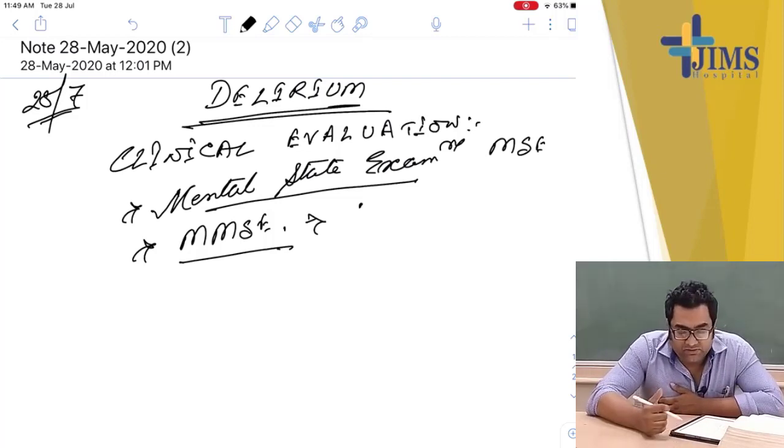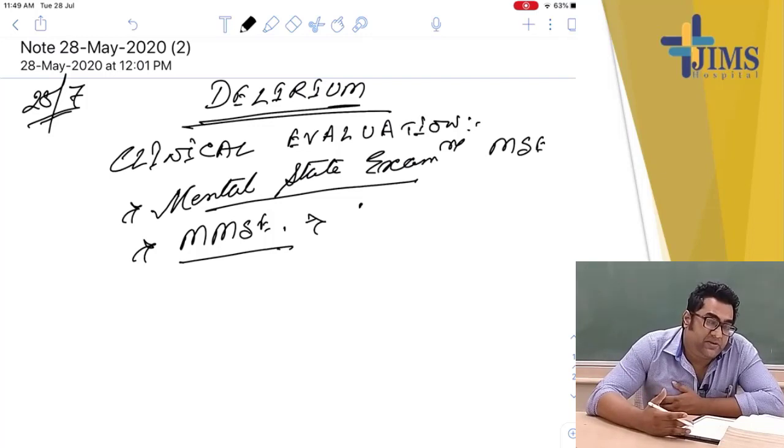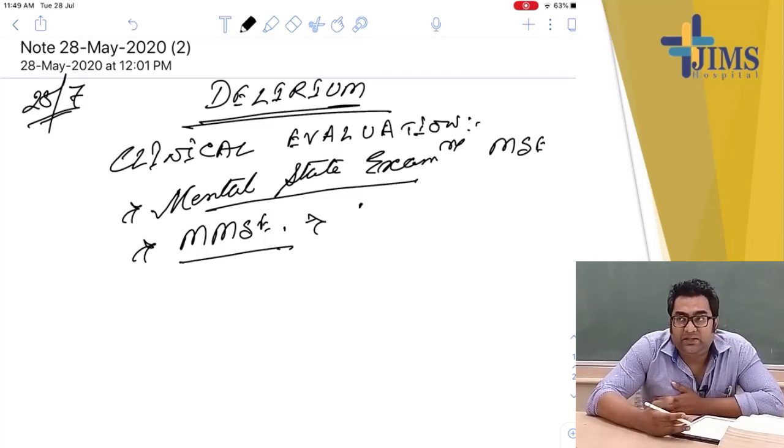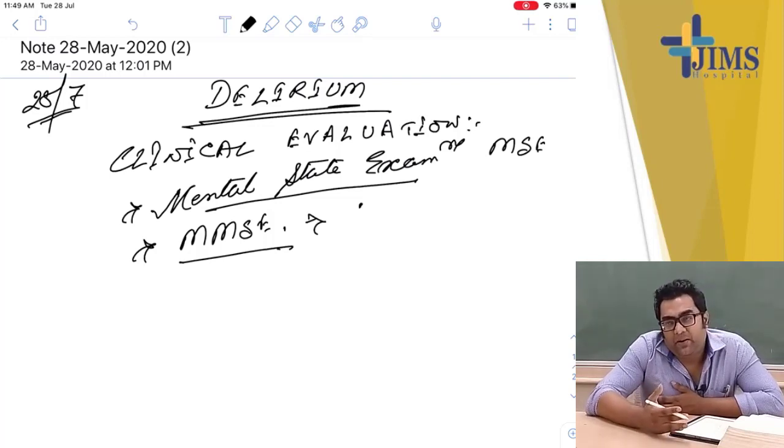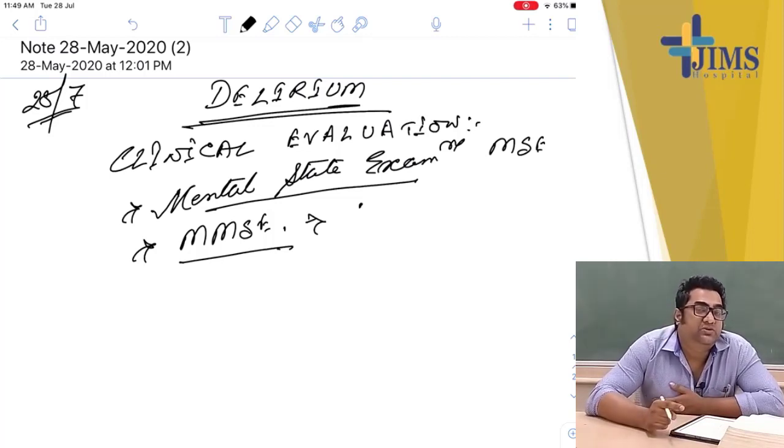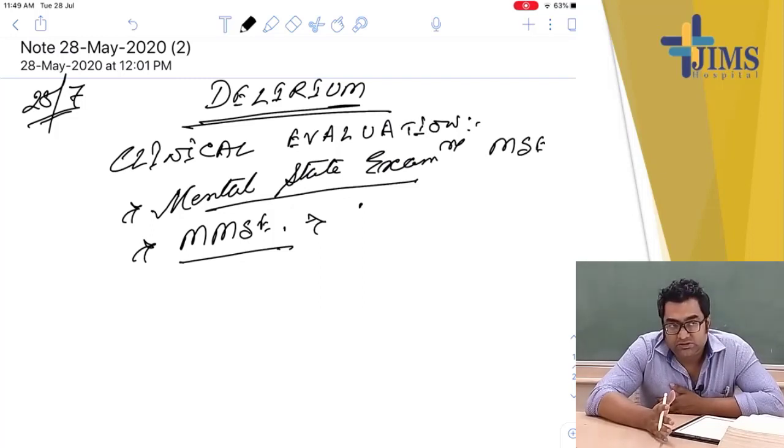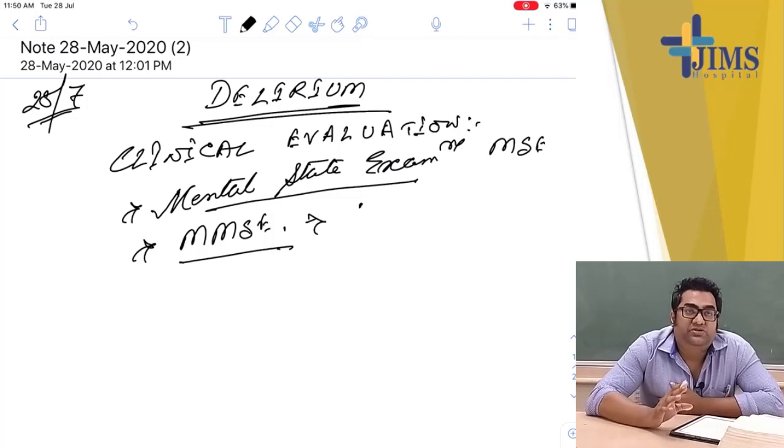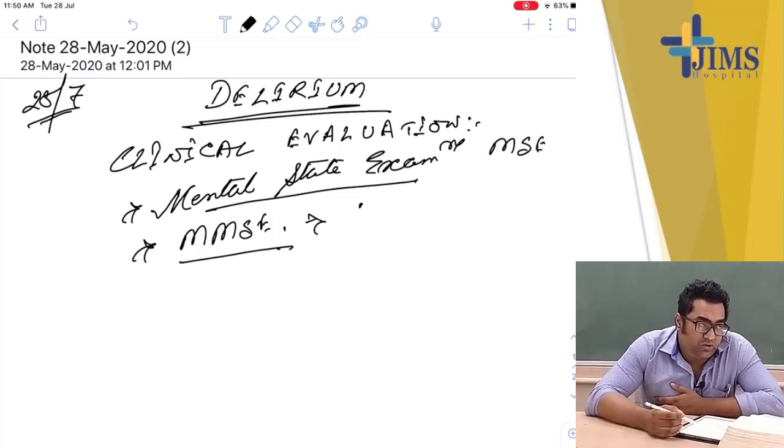We have found a lot of times a patient is admitted with normal condition but shifted to an ICU setup. In ICU there are no windows, it's an AC room which is covered, there is no sunlight. The patient is mostly sedated and given a lot of drugs because of which the orientation changes. Patient cannot understand which is day which is night, and that causes ICU induced delirium which we find a lot in clinical practice.